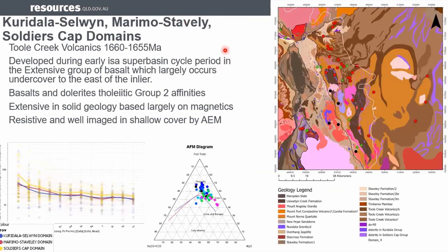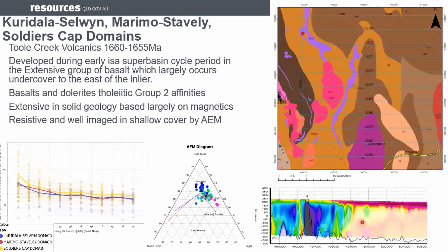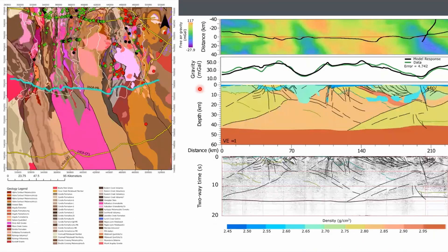Stepping across the Overhang Shear into the Crude Island, Maramo, Stavely, and Soldiers Cap domains, we get to the Till Creek Volcanics and development of the Isa Superbasin. Here they have a tholeiitic trend but are not enriched in light rare earths, so there's a large-scale break in the mafic rocks as we step into the eastern fold belt. On the AEM image they're quite well imaged under cover — you can easily pick out these dolerites, which are quite extensive at depth. On seismic we had to include significant volumes of mafic rocks in this part of the eastern succession.